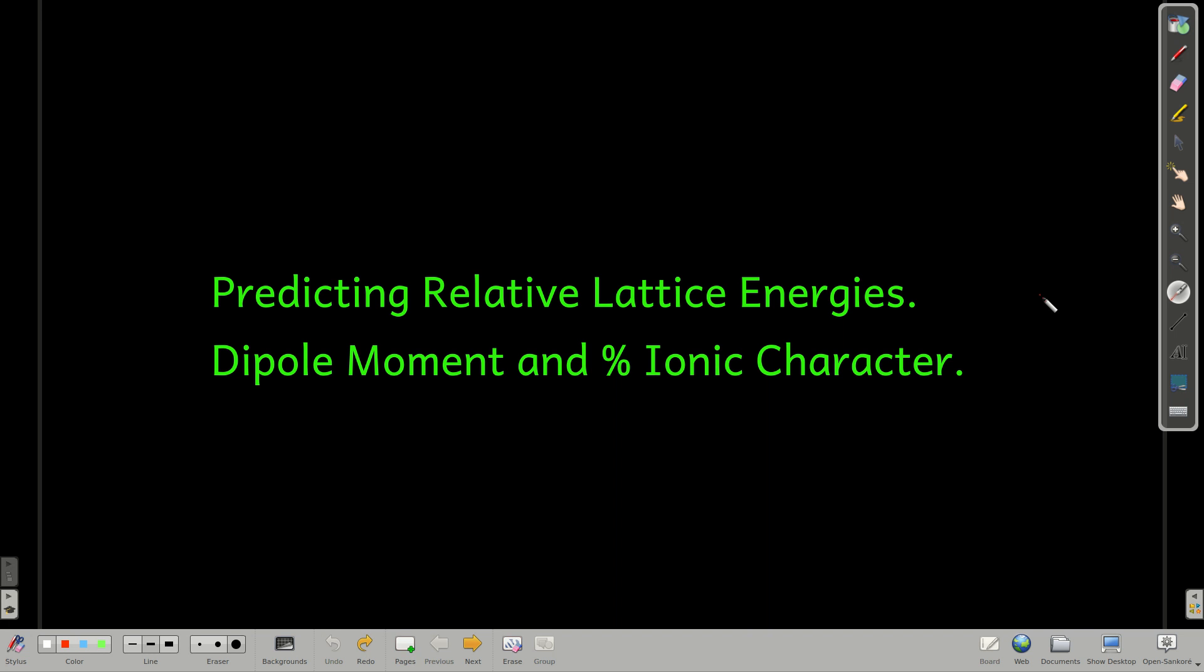In this module, we're going to look at how we can predict which compound has the greater or the lesser lattice energy by looking at what ions make up that ionic compound. We're also going to look at something called dipole moment and what percent ionic character is and how to calculate percent ionic character.